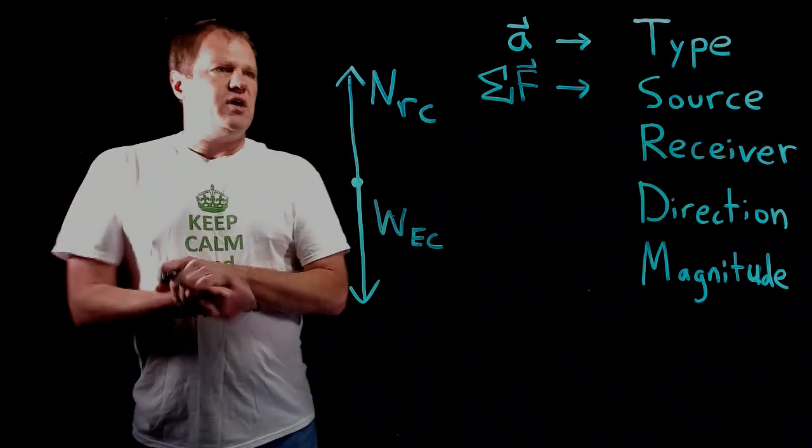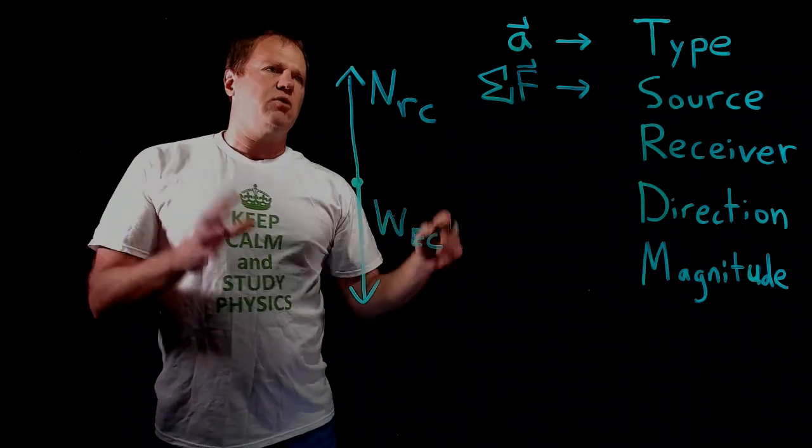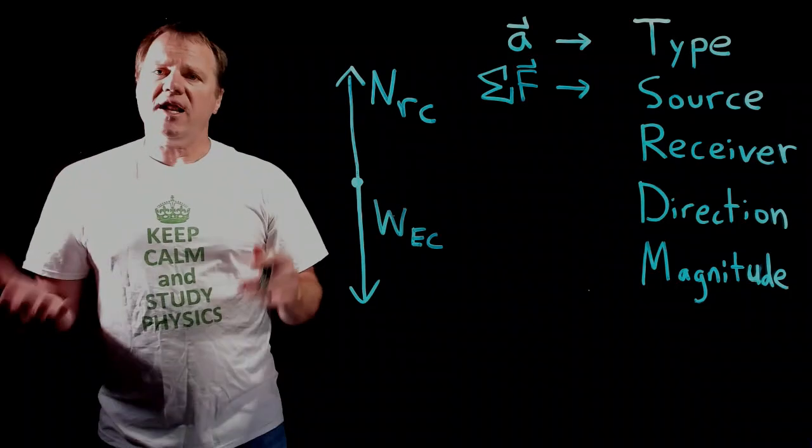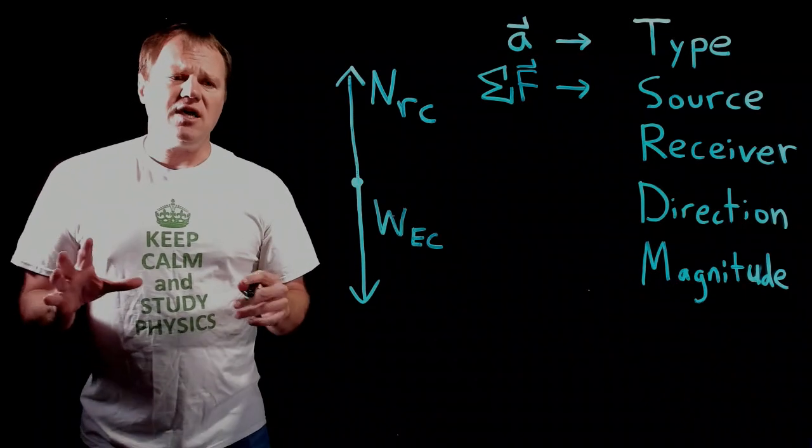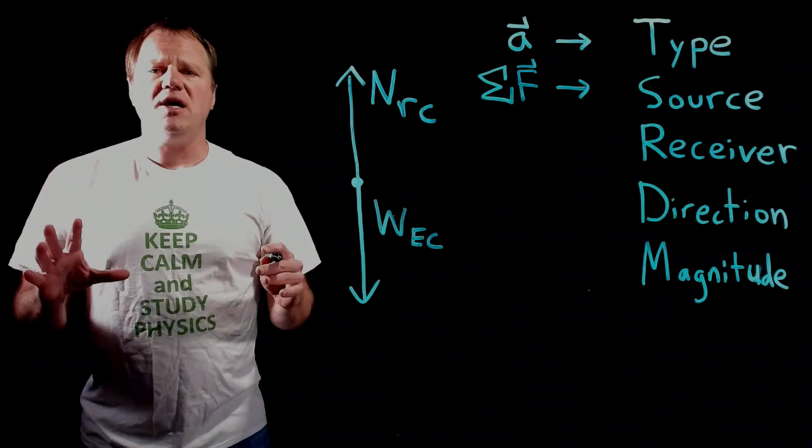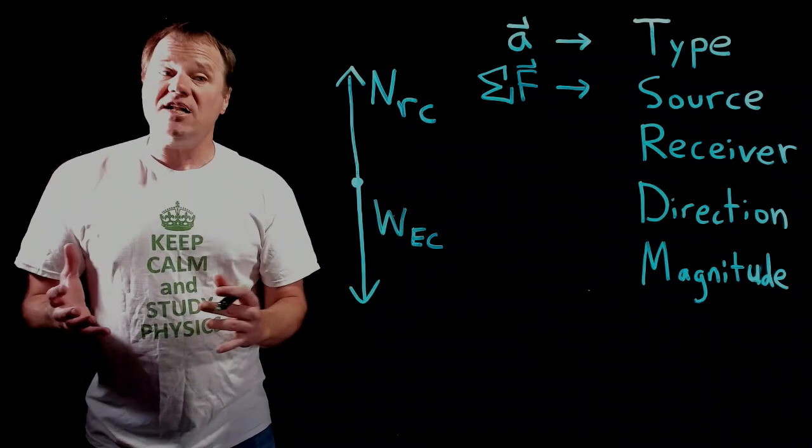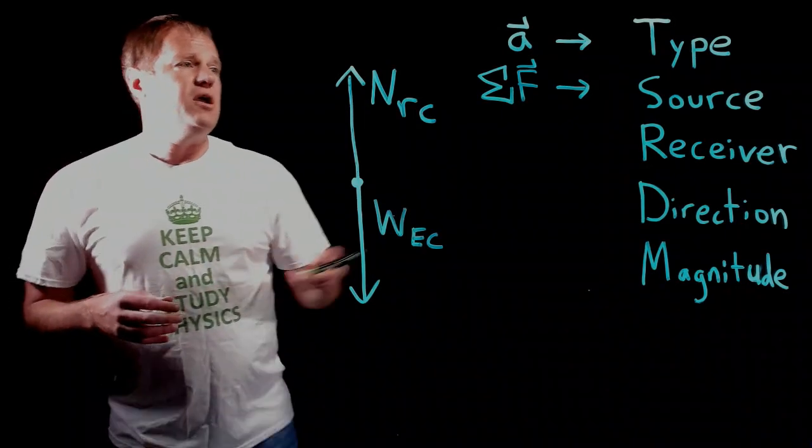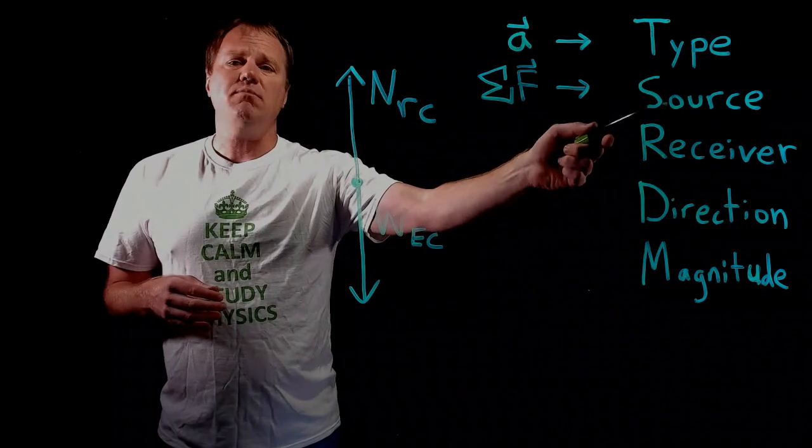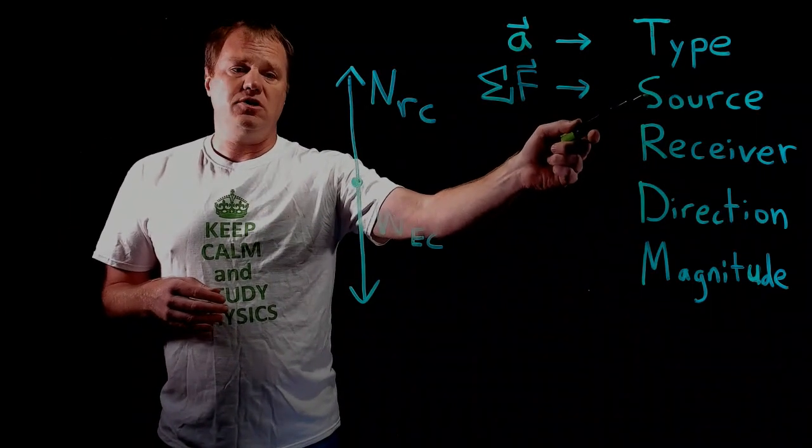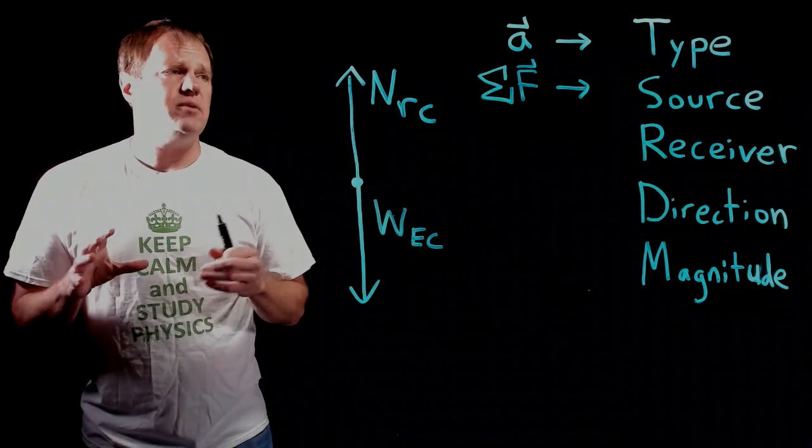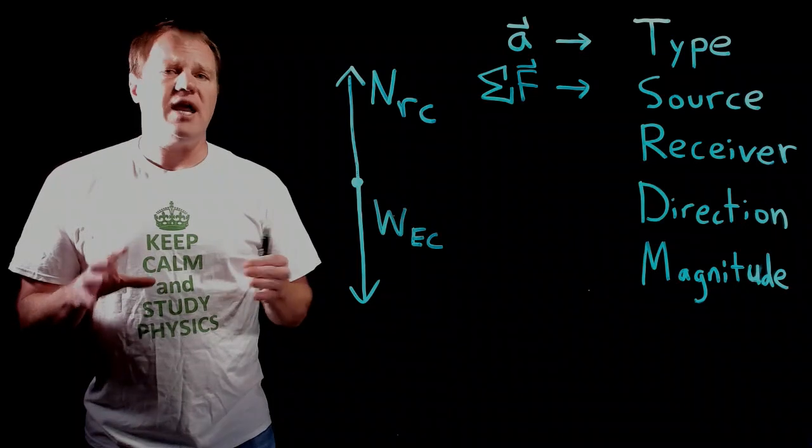So then let's think about the horizontal direction. It's accelerating to the right. Net force to the right. So what is providing that force? Now it's tempting to think of this situation as being something to do with the engine. But the engine is actually inside the car. And the source of the force has to be external to the object in question. So we can't attribute the force to the engine.